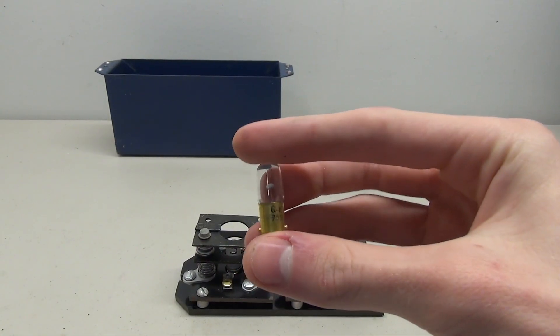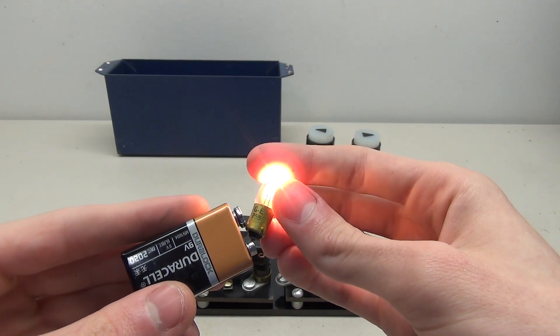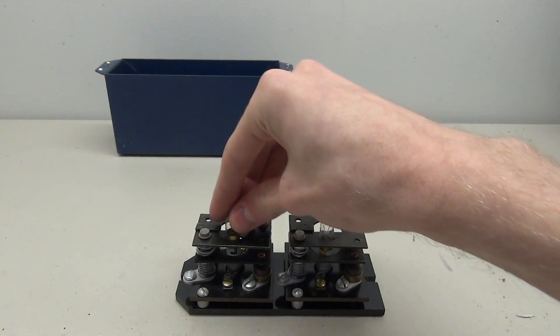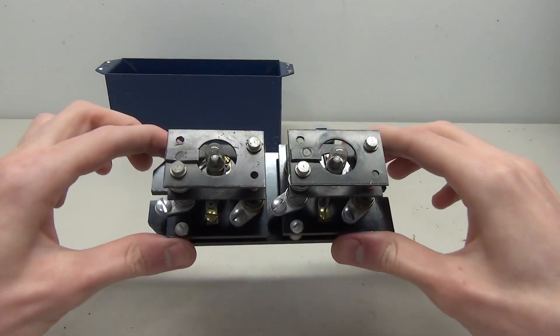The first thing I want to do is test these bulbs to see if they'll run off a nine volt battery. What do you know, look at that, they light up with a nine volt battery. So we can go ahead and leave these bulbs already in the button. Makes it super easy to wire.